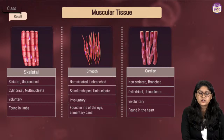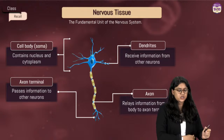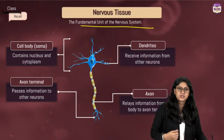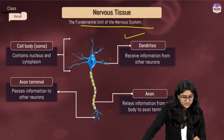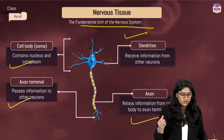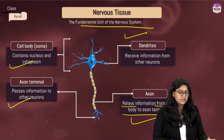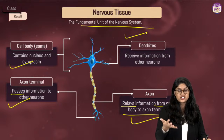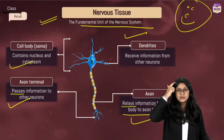Cardiac muscles work 24/7 — meaning till the person is alive, the heart muscles keep working. Moving to nervous tissue — the neuron is the biggest cell in our body. It has a cell body, dendrites, axon, and axon terminals. Dendrites receive information from another neuron, the axon relays it from the cell body to the axon terminal, and the axon terminal passes the information to the next neuron.